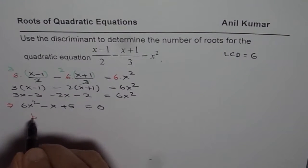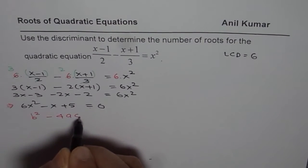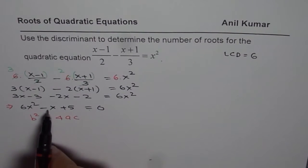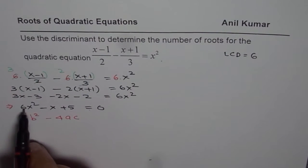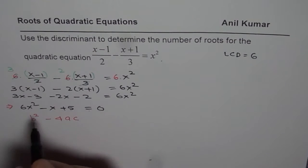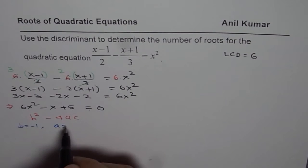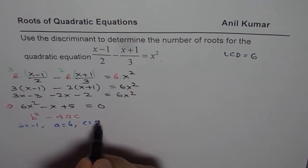Discriminant means we have to figure out what is the value of b squared minus 4ac. Now b is coefficient of x, a is coefficient of x squared, c is the constant. So in this equation, we know b is equal to minus 1, a is equal to 6 and c is equal to 5.